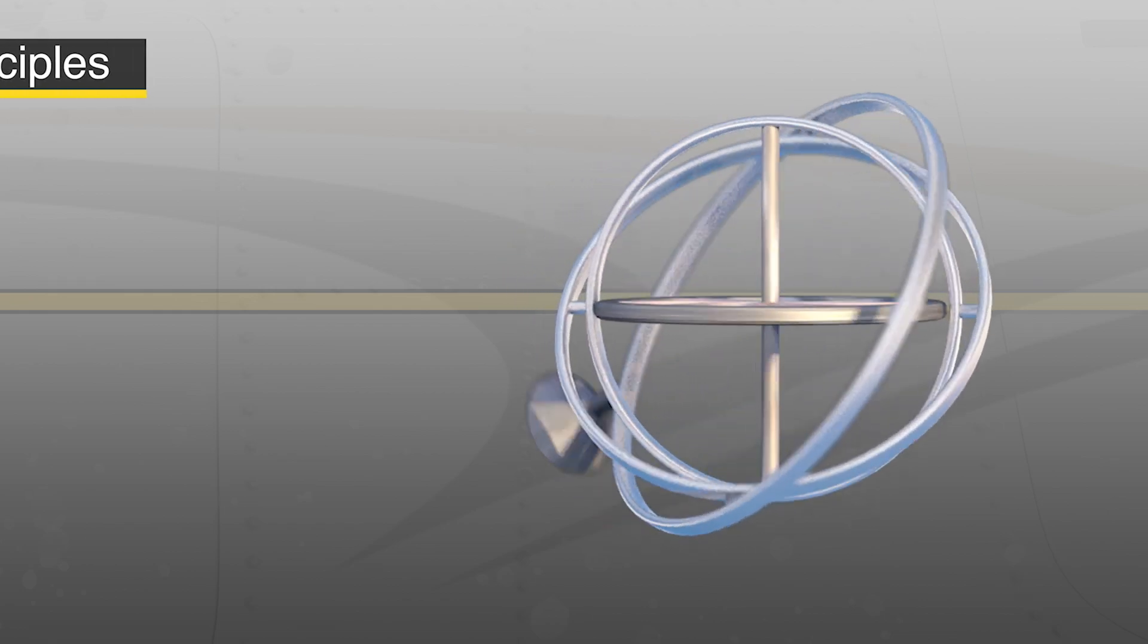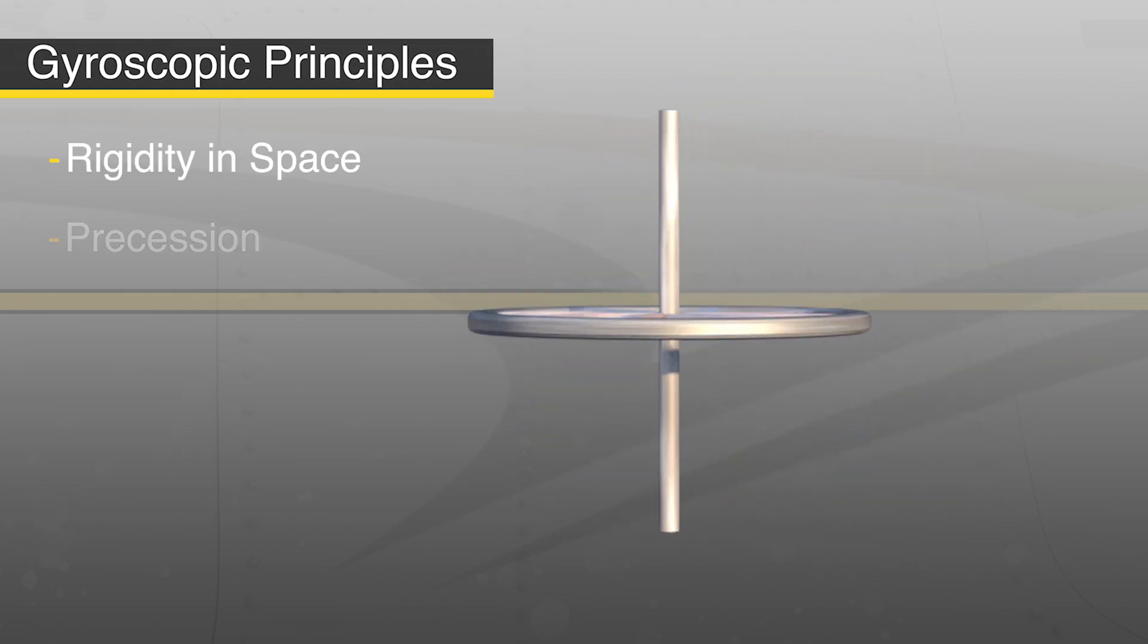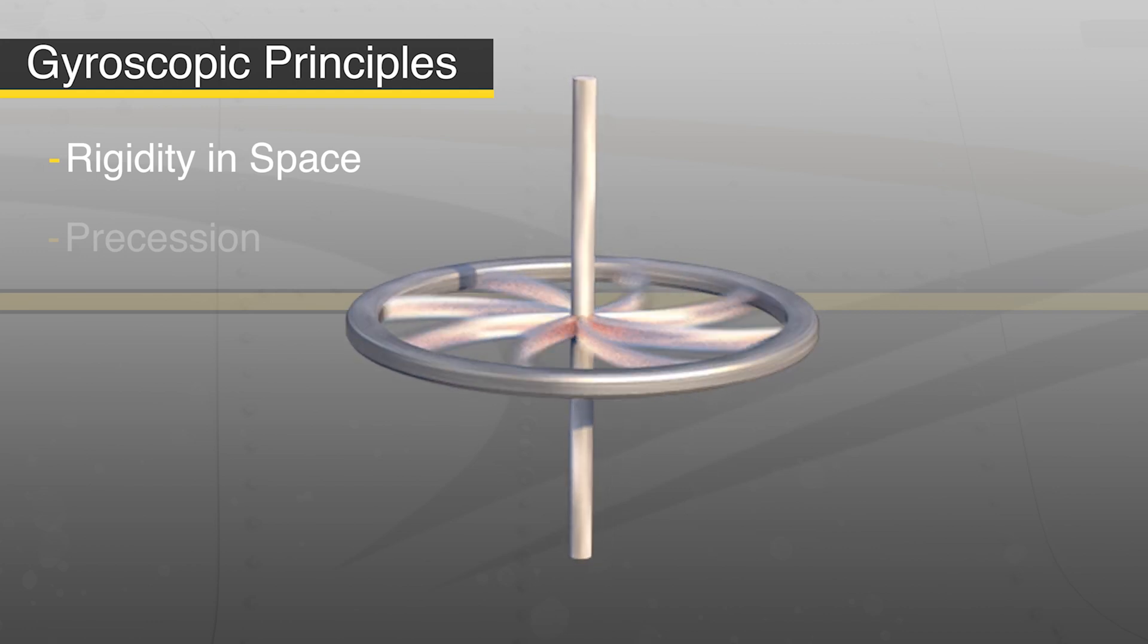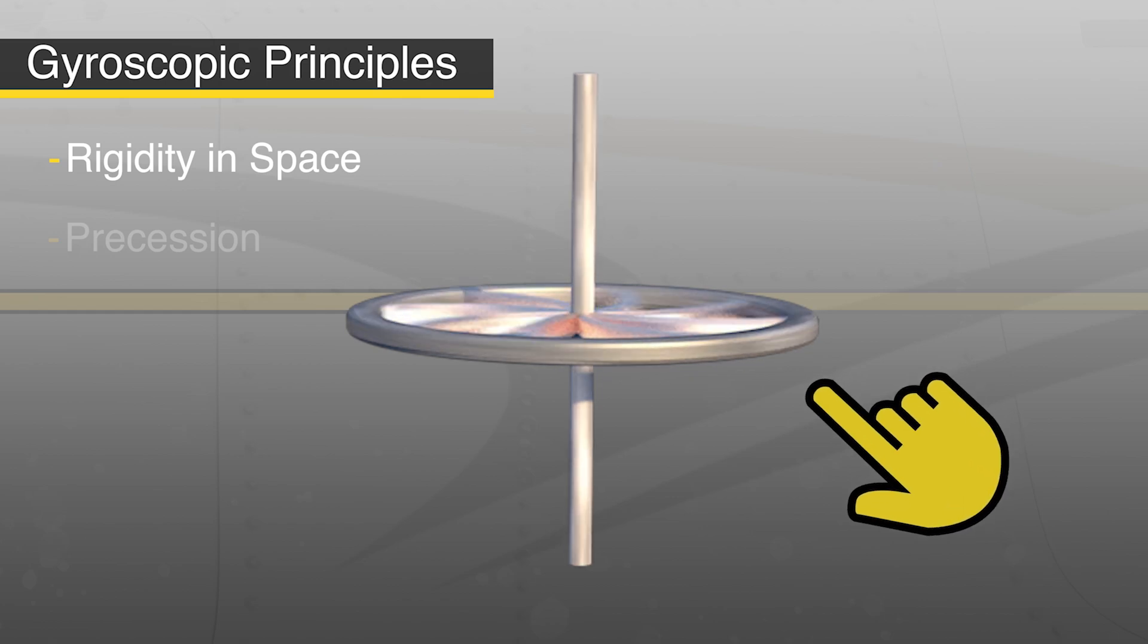These gyroscopes operate on two principles: rigidity in space and precession. Rigidity in space refers to the gyroscope's ability to hold its position. Gyroscopes center on a spinning wheel which has weight spread evenly along the edges. As it spins faster, it becomes more stable in its track.